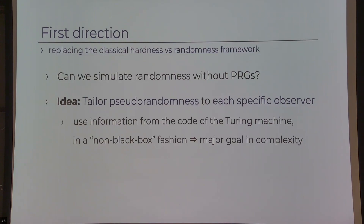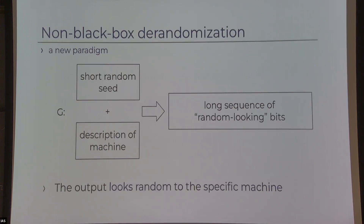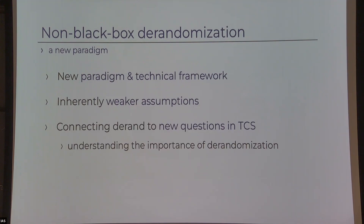Instead of one PRG good for all algorithms, every algorithm gets corresponding pseudo-randomness. The algorithm gets a short random seed plus a description of the specific machine, and generates pseudo-random bits good for that particular machine. This relies on inherently weaker assumptions — it doesn't require the same circuit lower bounds — and it connects de-randomization to new questions in theoretical computer science, helping us better understand why it's so central.